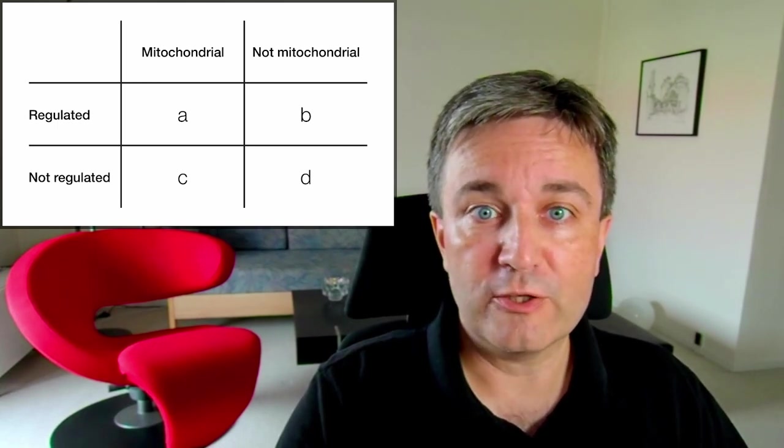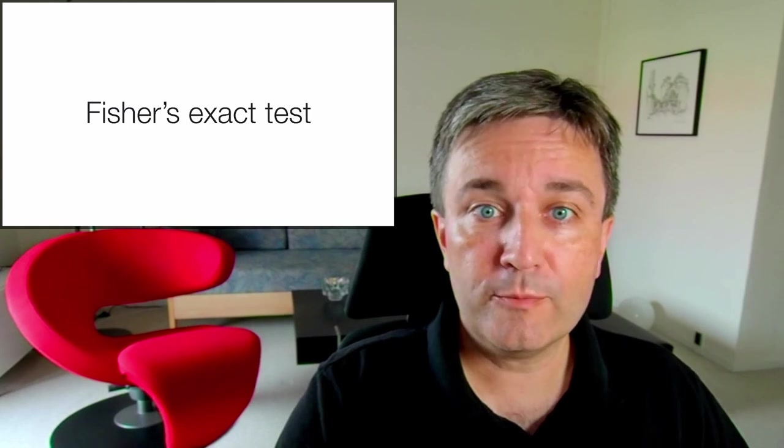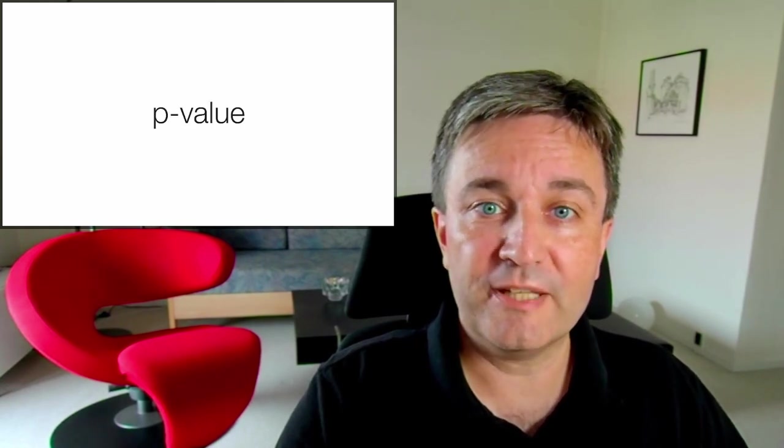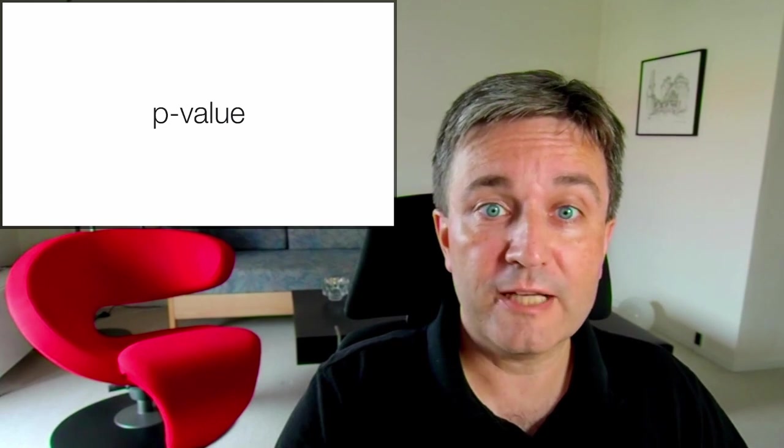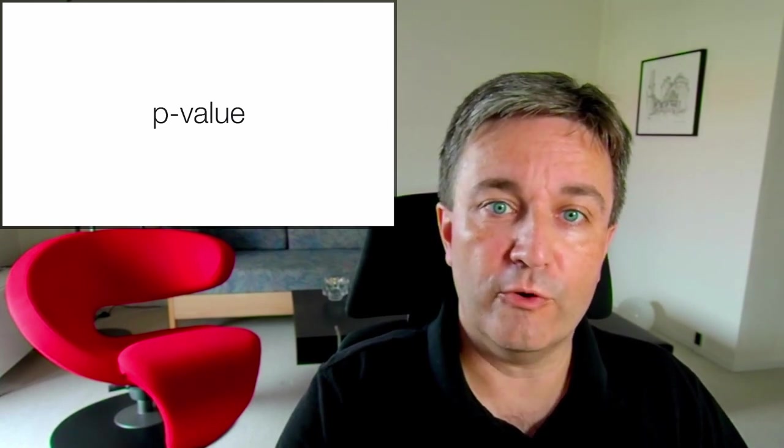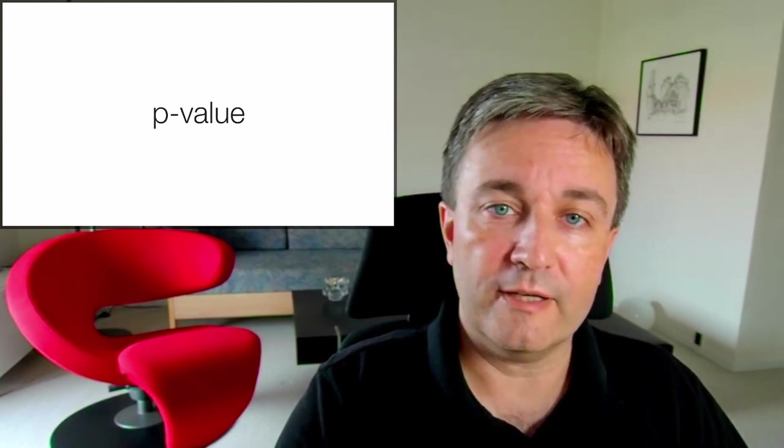With this two by two contingency table, you can perform Fisher's exact test and that way obtain a p-value that answers whether mitochondrial proteins are in fact over-represented on your list of regulated proteins.